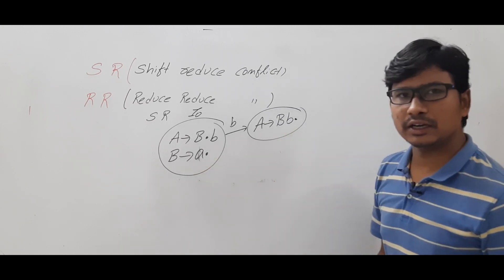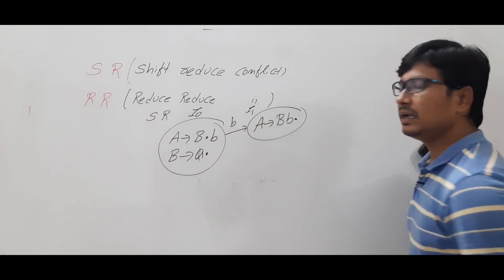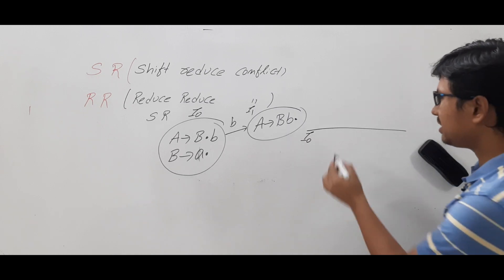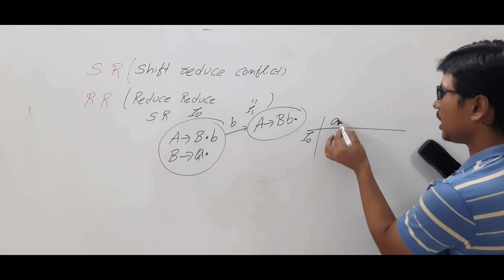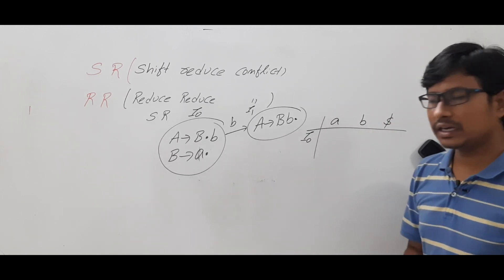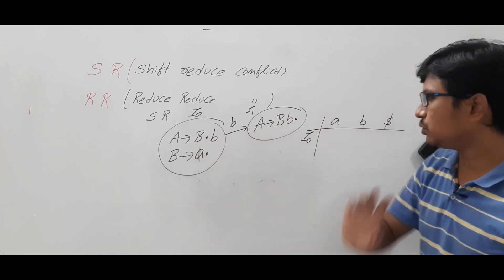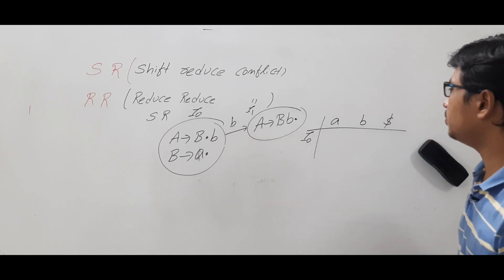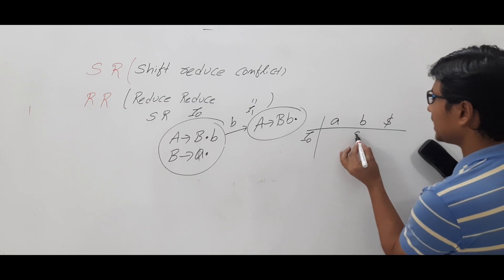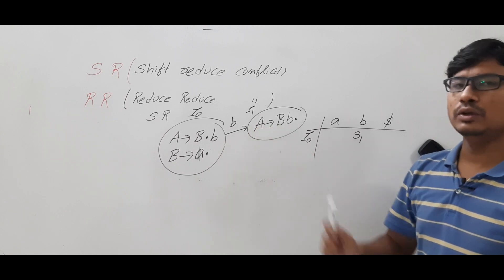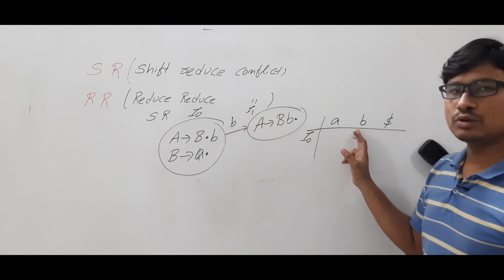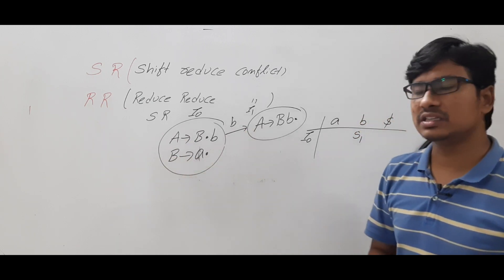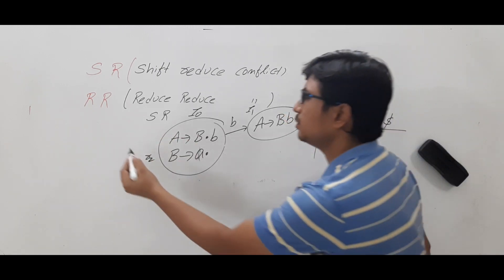After shifting on b, I get the item A → bB· and also the already-reduced item — call this state I1. Now let me construct the LR0 parsing table. For item I0, the action part will have terminals a, b, and the extra symbol dollar. From I0 on b, we go to I1, so we write S1 (shift to state 1) in the action part. I0 also has a reduce move — say B → A· is production number 2 (r2).